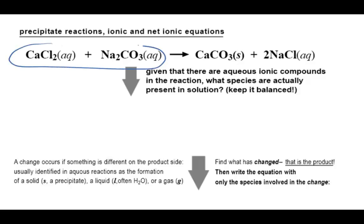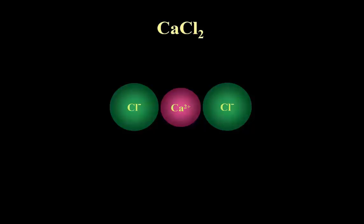Aqueous calcium chloride is reacting with aqueous sodium carbonate. The subscript for the chloride is two, and when writing aqueous ions, students often see that as a diatomic chloride molecule, when it is in fact two separate chloride ions. Remember this is an ionic compound.